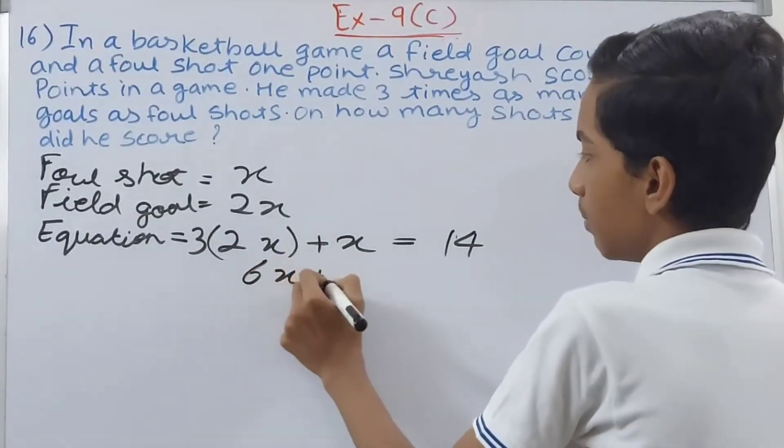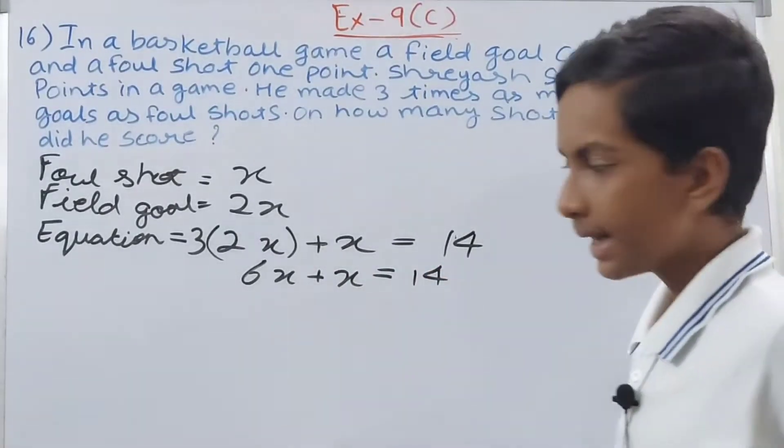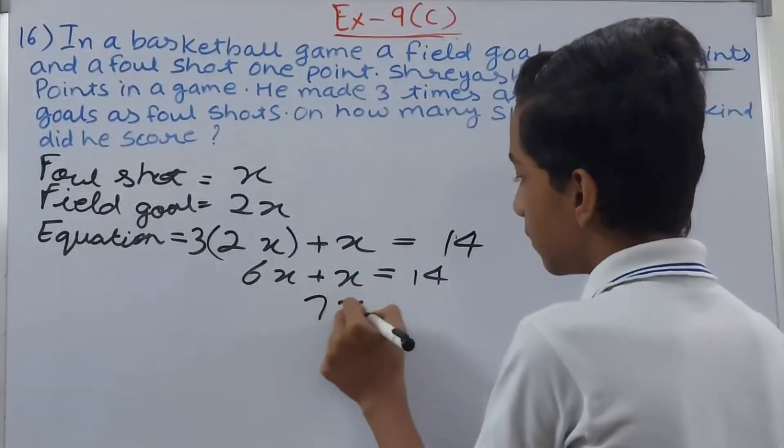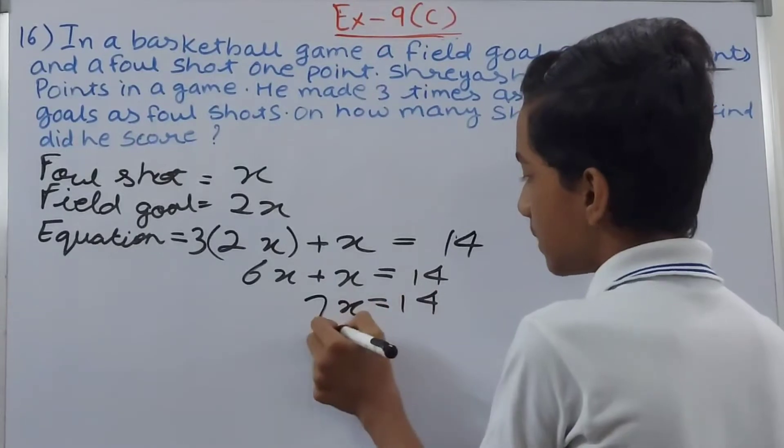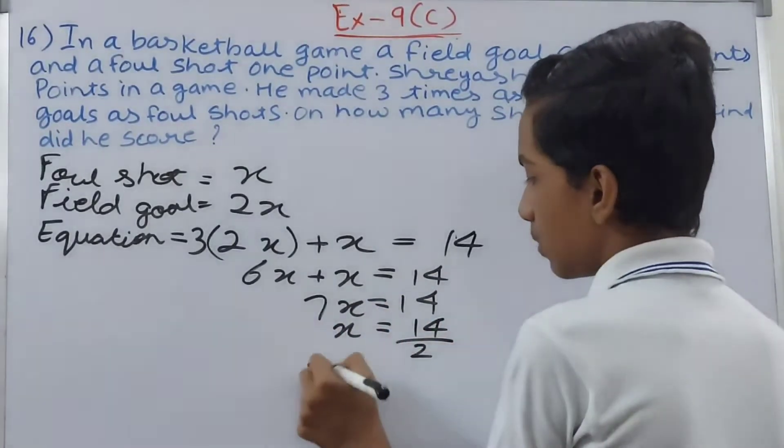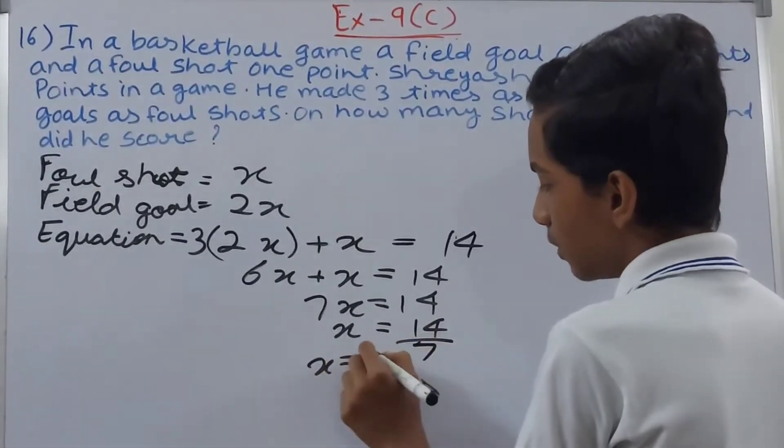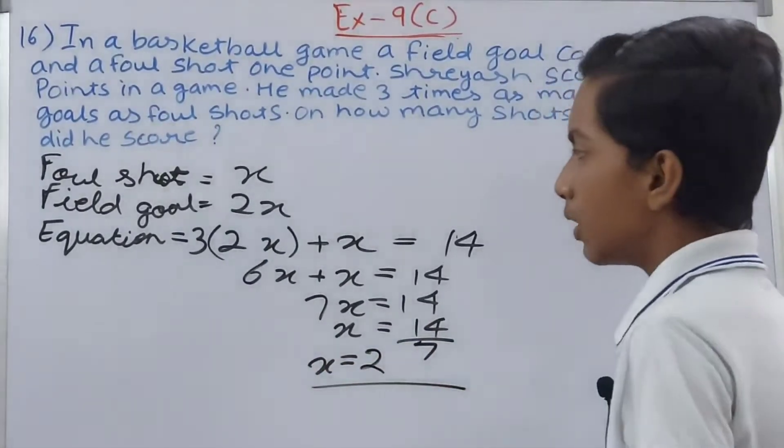7x equals 14. Hence x equals 14 divided by 7, which is 2. So x is 2.